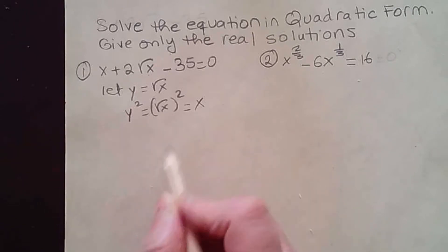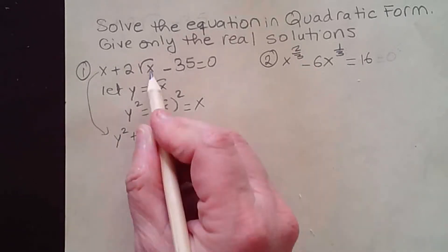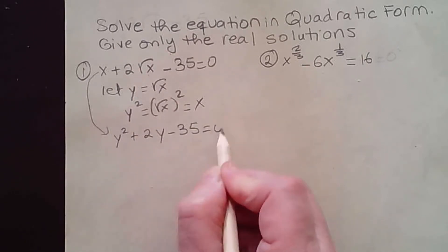So that means this equation becomes x, which is y squared, plus 2 square root of x, which is y, minus 35 equal to 0. Now I turned it into quadratic equation in y.